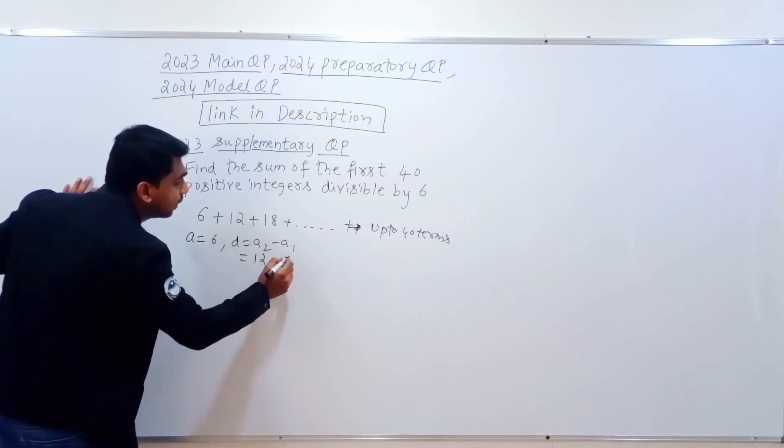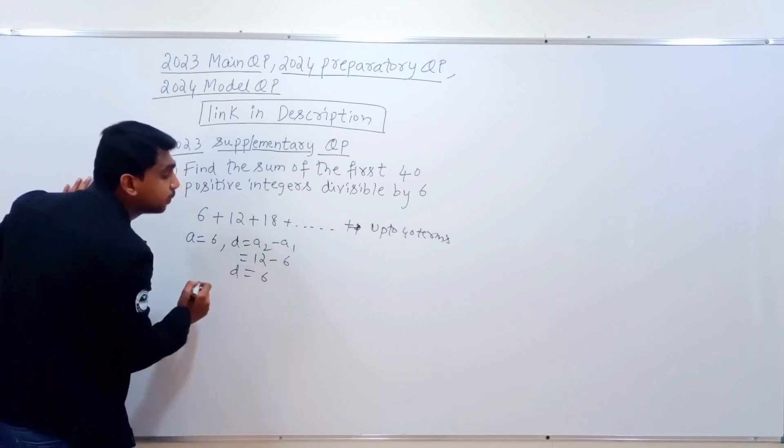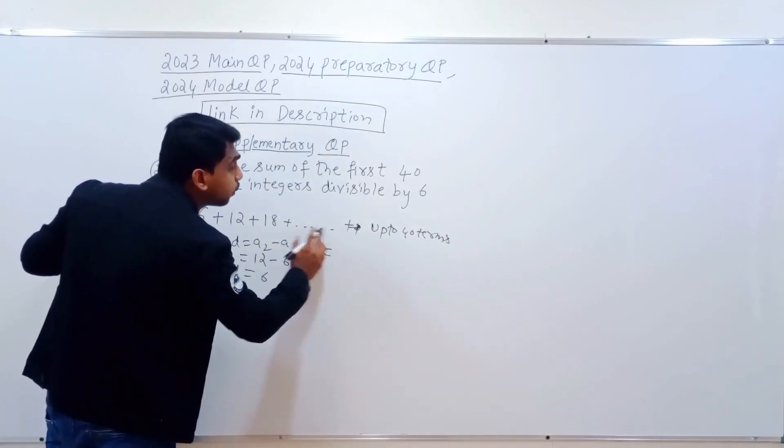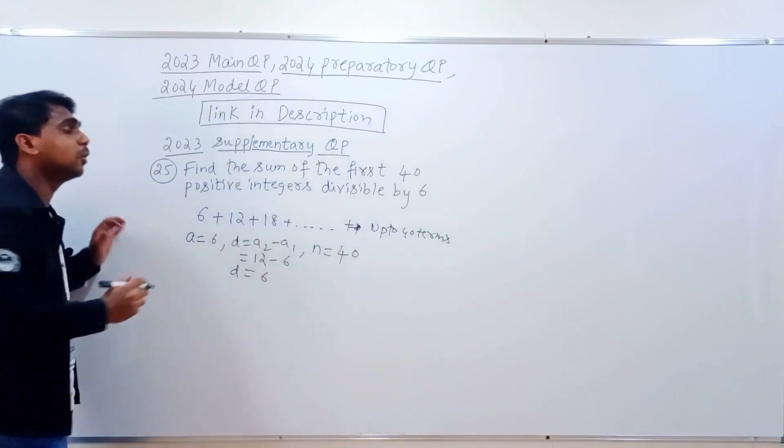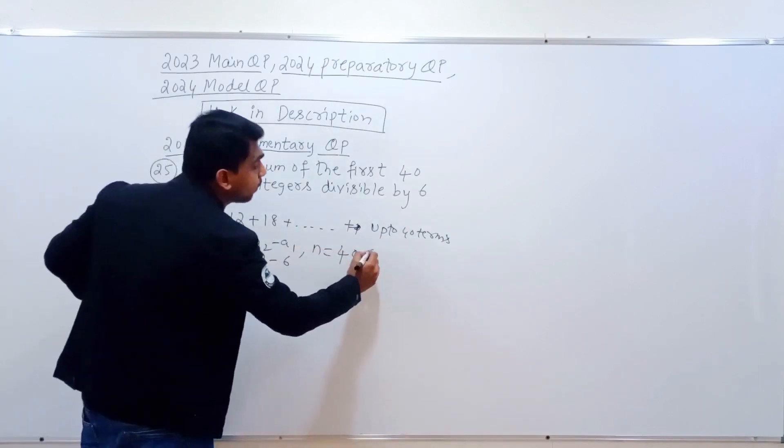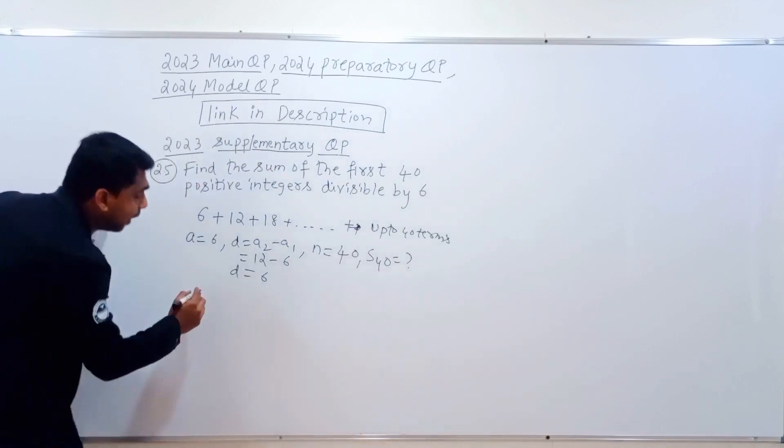Okay, the number of terms n is equal to 40. We have 40 terms, n value is 40. This sum Sn is equal to S40. Okay?